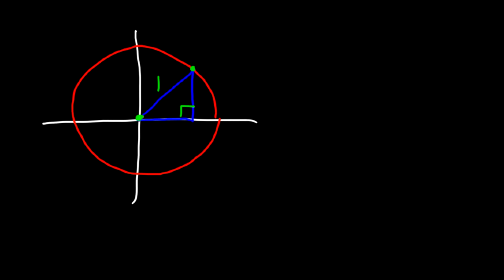Now let's go back to the unit circle. In the unit circle, we said that it's a circle that has a radius of 1. So if we were to draw a triangle, the hypotenuse of the triangle will have a value of 1, because that's the radius — the distance between the center of the circle and a point on the circle. Now this is x and this is y, and on the inside we have the angle theta.